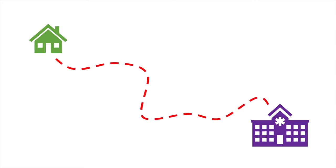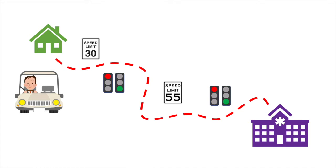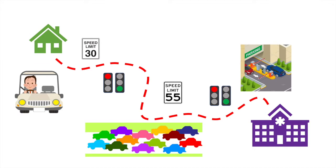Imagine your daily commute from home to work at the hospital. The time it takes you to reach the hospital is influenced by the system. In this case, the system includes your car, your driving skills, road conditions, traffic lights, speed limits, the other cars on the road, and the time it takes in the parking garage.